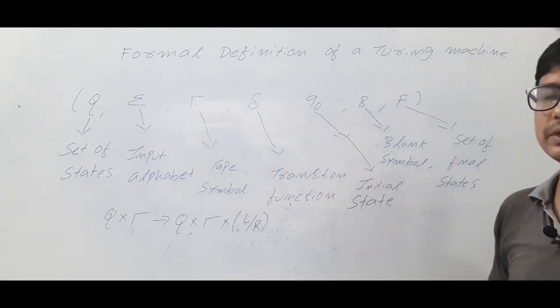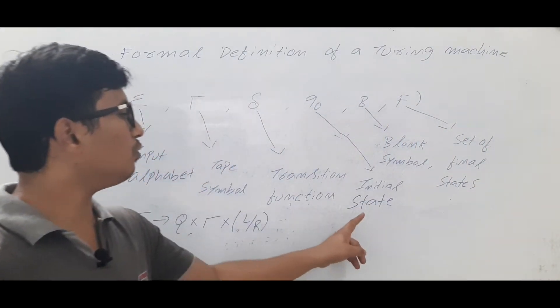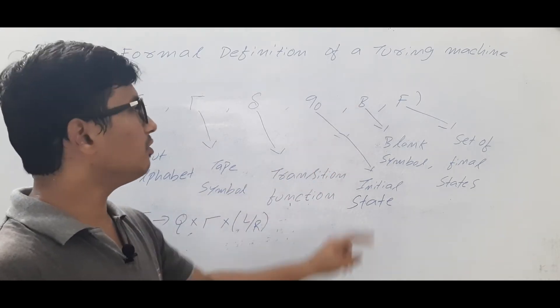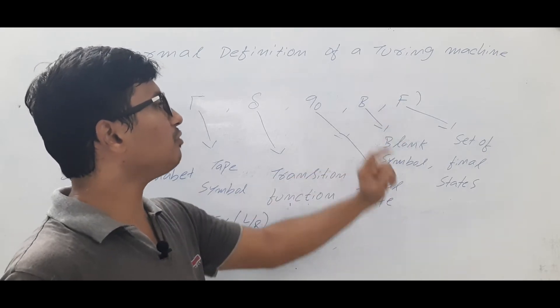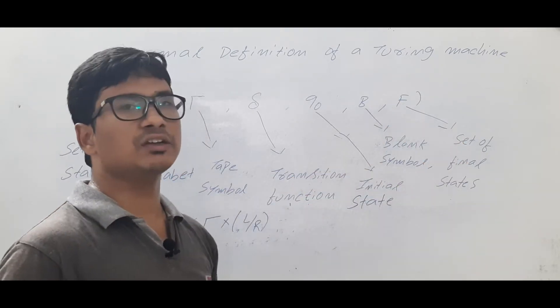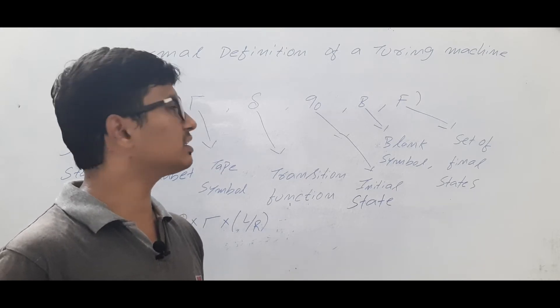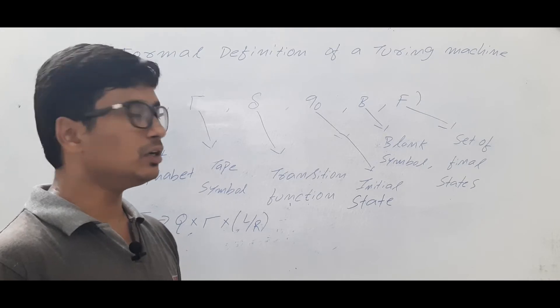You have q0, which represents the initial state. Any Turing machine will have only one initial state. You have b, which denotes the blank symbol on a tape. And you have F, which denotes the set of final states - meaning you can have more than one final state, however you can have only one initial state in the Turing machine.